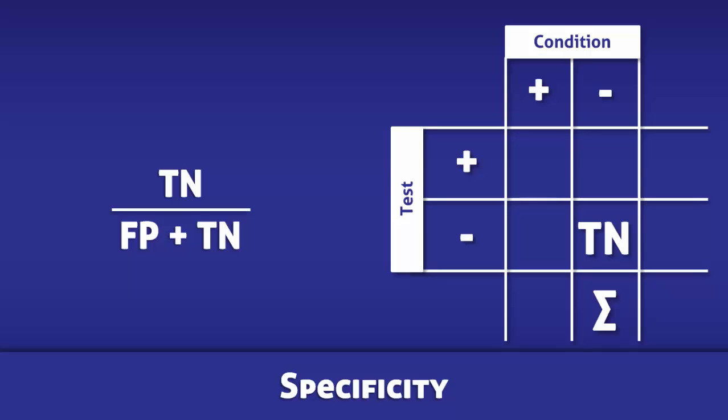So once more, specificity is calculated by dividing the number of true negatives by the total number of people without the disease.